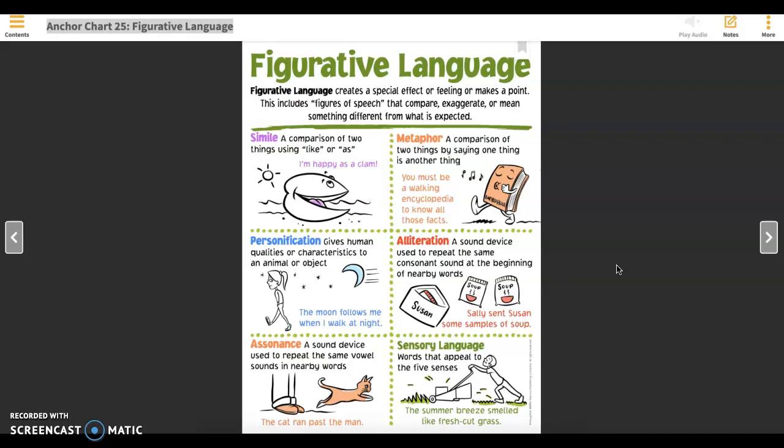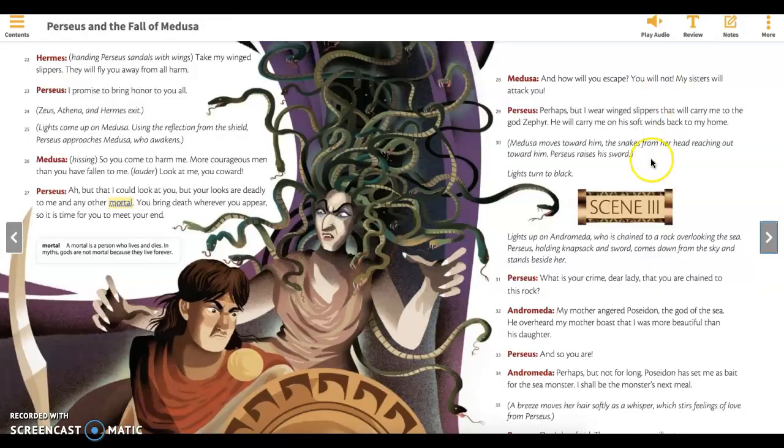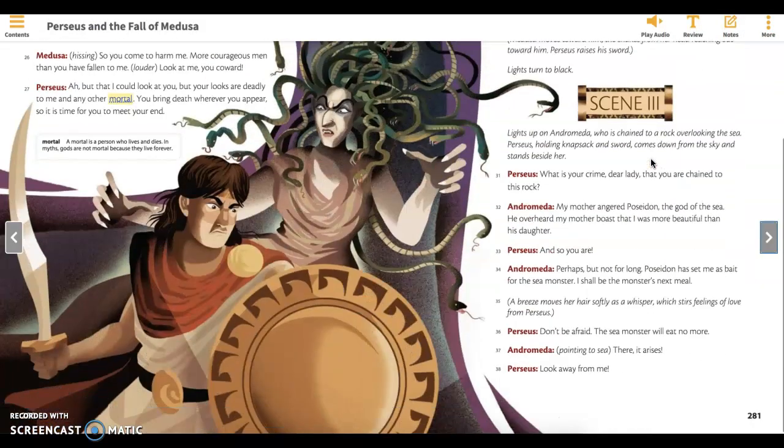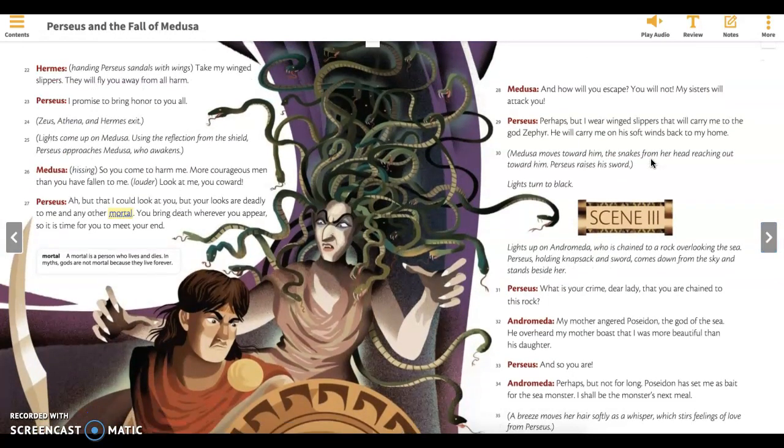So we are going to practice finding some of these examples of figurative language in Perseus and the Fall of Medusa. And the first page we're going to start on is page 280 and 281. And first, let's look at section 22. And Hermes is the one speaking. And the stage direction says, Handing Perseus sandals with wings. Take my winged slippers. They will fly you away from all harm. So that winged slippers, that's helping me imagine his escape. It's not just any slippers. They have wings on them.